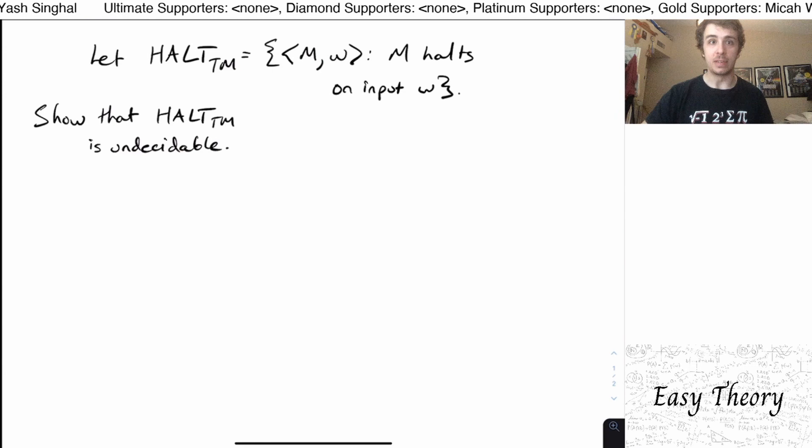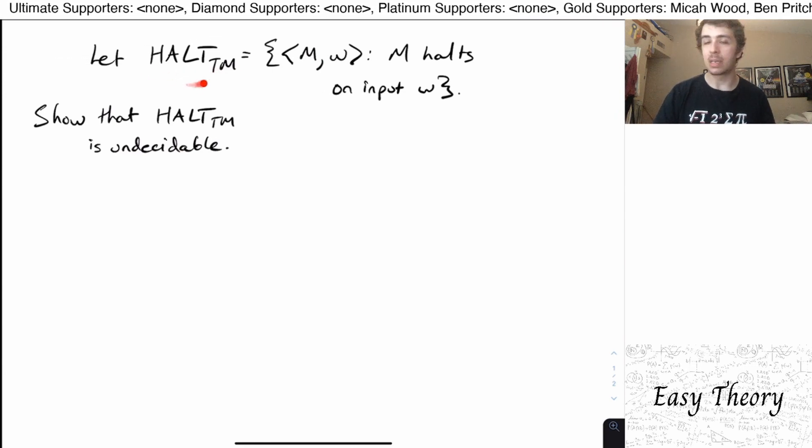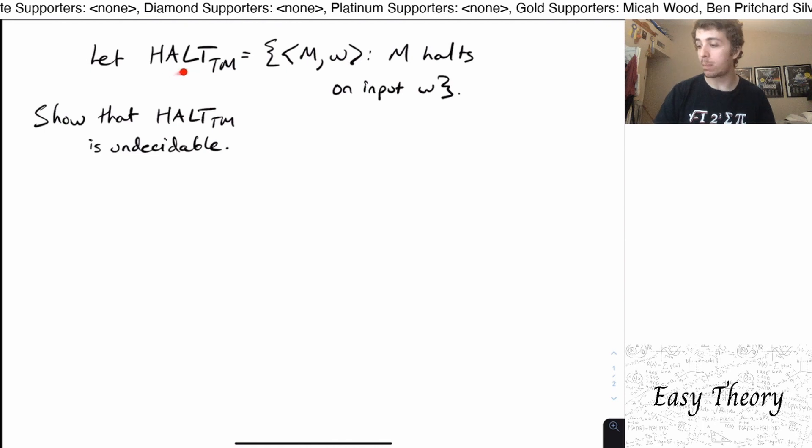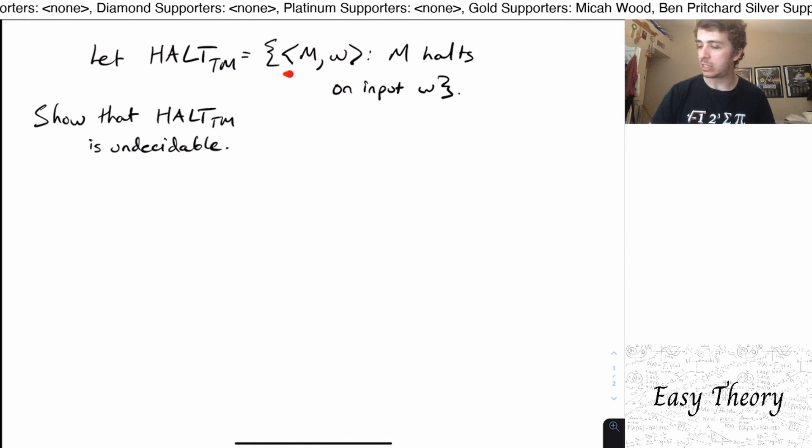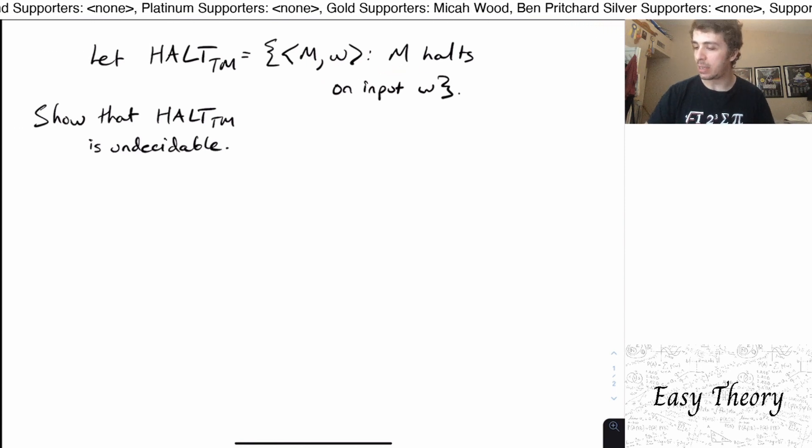Hi, and welcome back to another edition of Easy Theory. So today we're going to be looking at this language, which is the halting problem, formally called HALT_TM, which is the set of all pairs of Turing machines M with an input W such that M halts on input W.